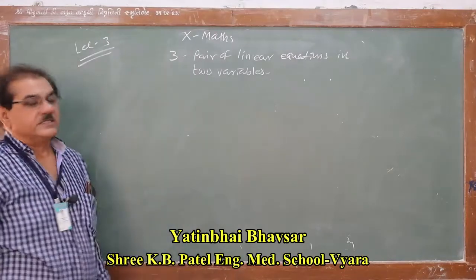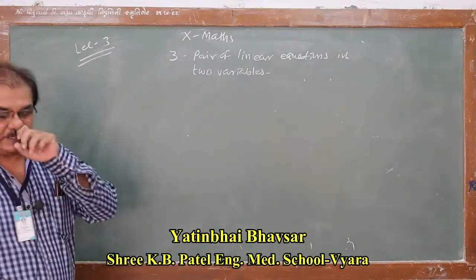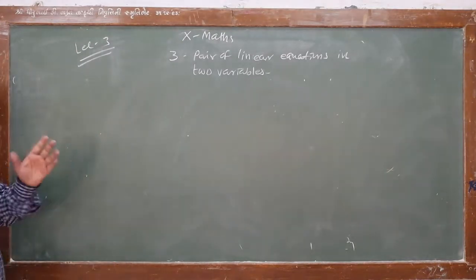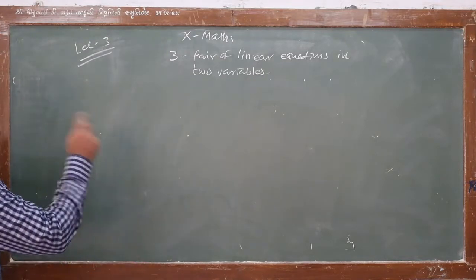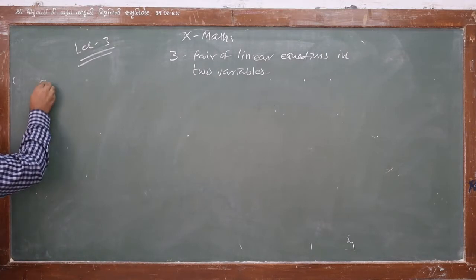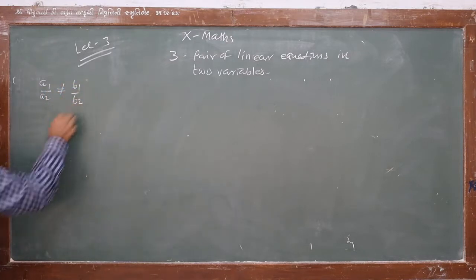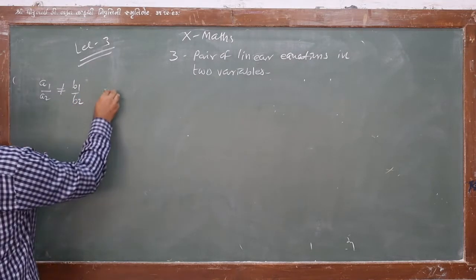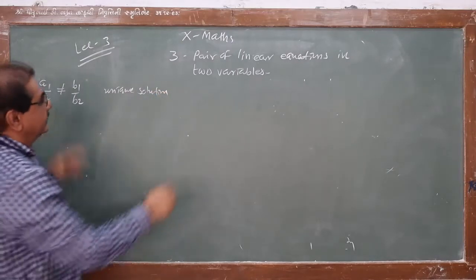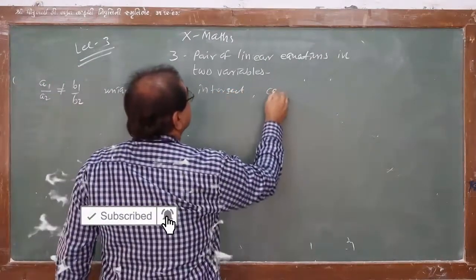Hello friends. Standard 10 Maths, Chapter 3: Pair of Linear Equations in Two Variables. This is my lecture number three. In the last lecture we studied three types of pair of equations and compared them with the coefficients a1, b1, c1, a2, b2, c2. To recollect: if a1/a2 is not equal to b1/b2, this gives a unique solution — both lines intersect and the pair of equations are consistent.